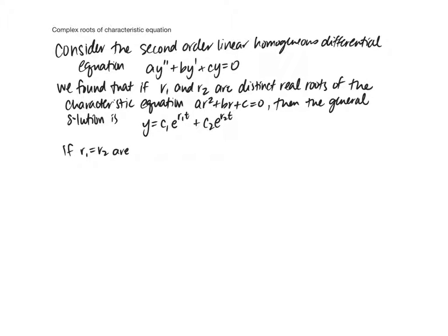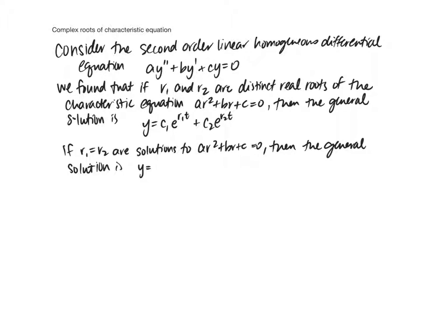And if r1 equals r2 — so we have repeated real roots — then the general solution is y equals c1 e to the r1t plus c2 t e to the r1t. Because r1 and r2 are the same, it doesn't matter which we use. So these are the two cases we've done so far.